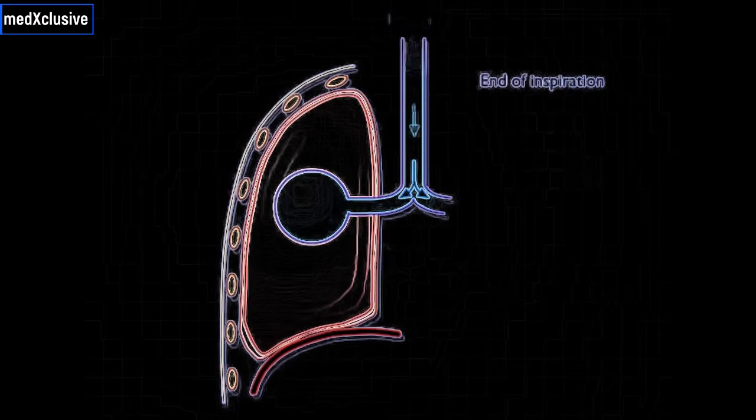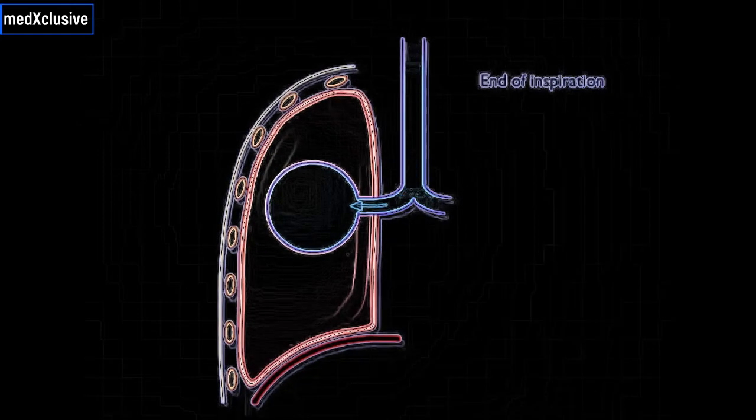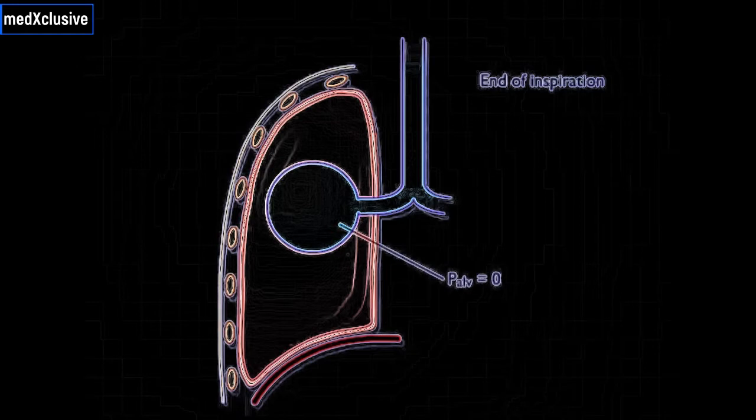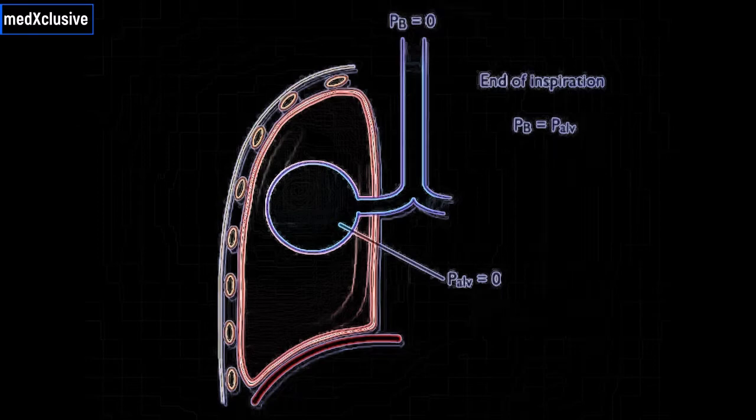At the end of inspiration, the thorax and alveoli stop expanding. Air flow into the lungs causes alveolar pressure to become equal to barometric air pressure. Because the pressures become equal, no more movement of air occurs.